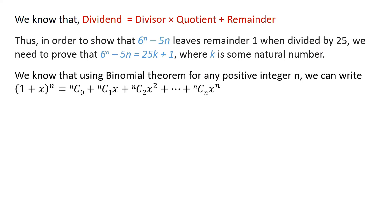We know that using the binomial theorem, for any positive integer n, we can write: (1 + x) raised to the power n equals n choose 0, plus n choose 1 times x, plus n choose 2 times x raised to the power 2, and so on, plus n choose n times x raised to the power n.